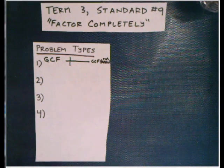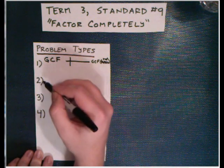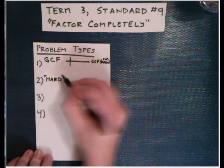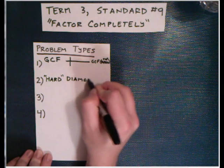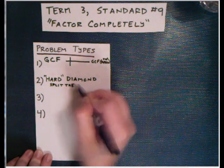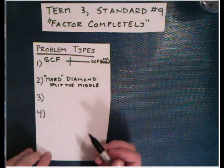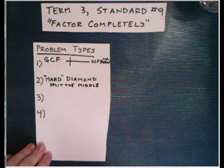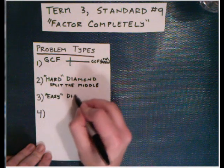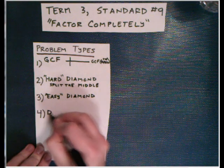The second strategy that you might be asked to do, you could always start with GCF on any of these, but you could also be asked to then do a so-called hard diamond, in which case you'll end up actually using split the middle. You could also use the box, same thing. A third method you could be asked to do is a so-called easy diamond, where the problem sets up nicely and there's less work for you to actually do. You don't actually have to do the split in the middle. And the last one could be a difference of squares.